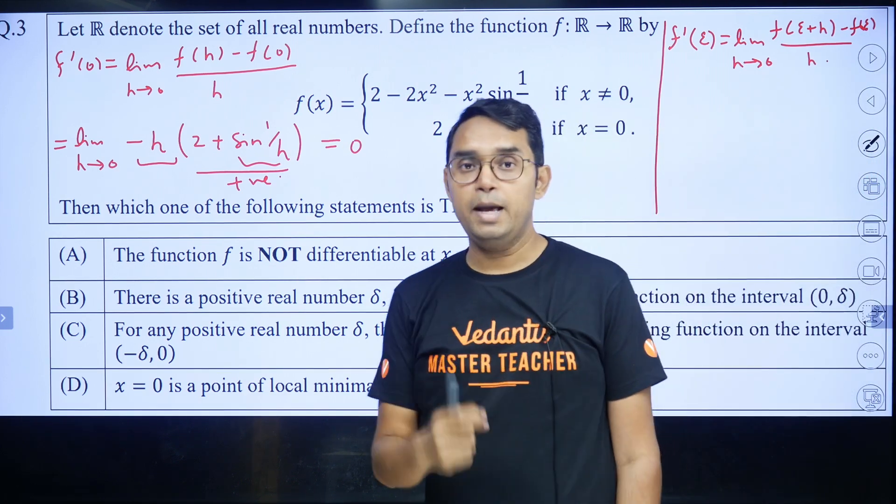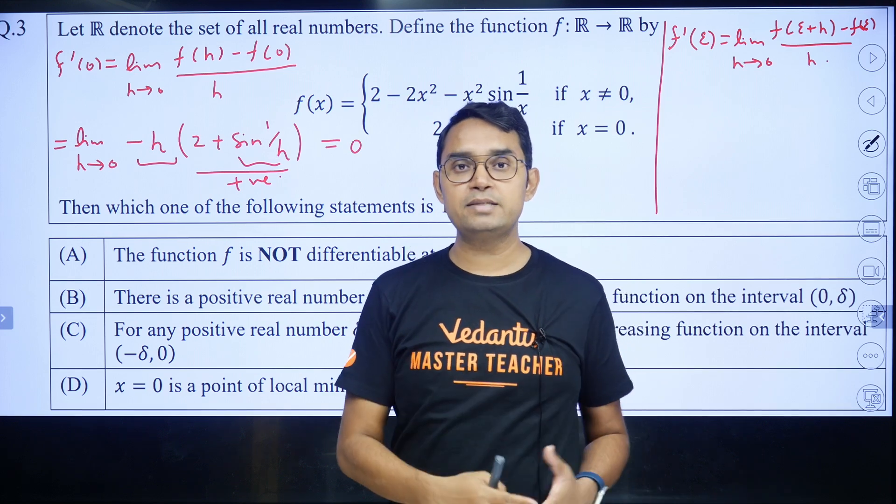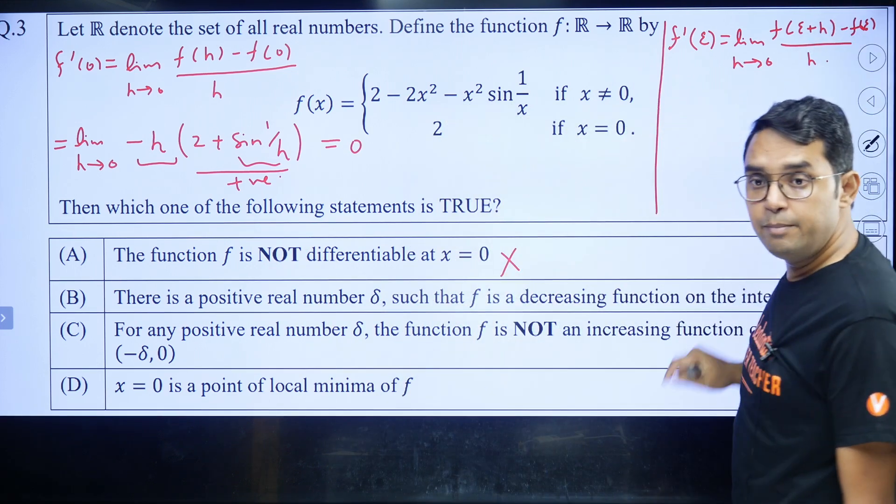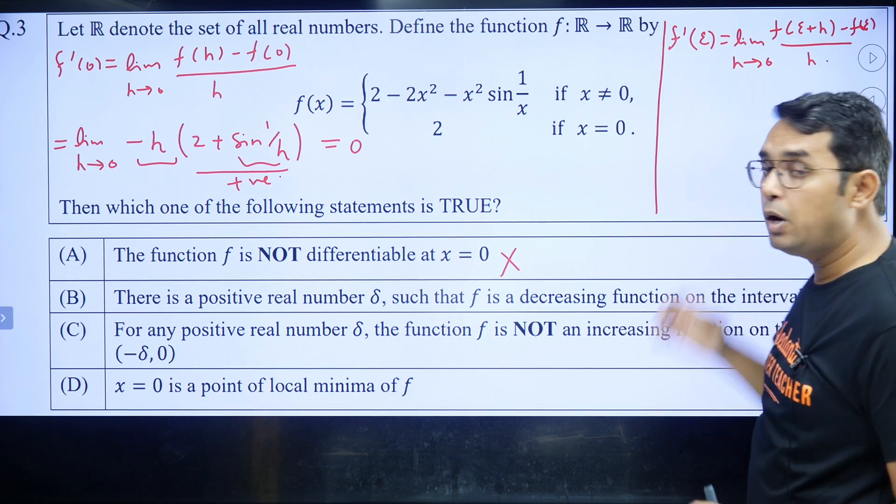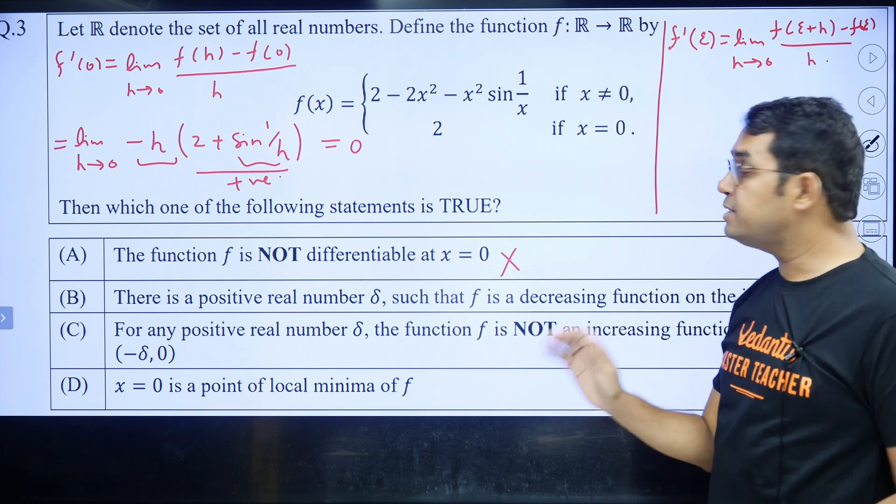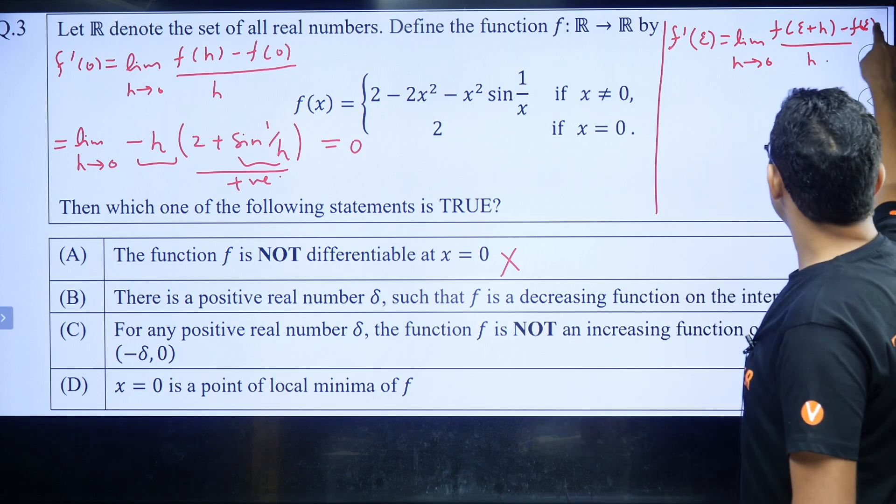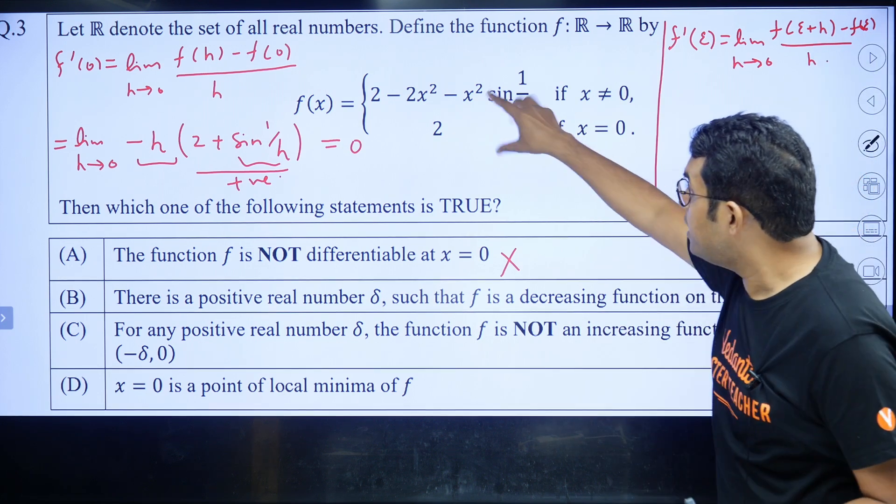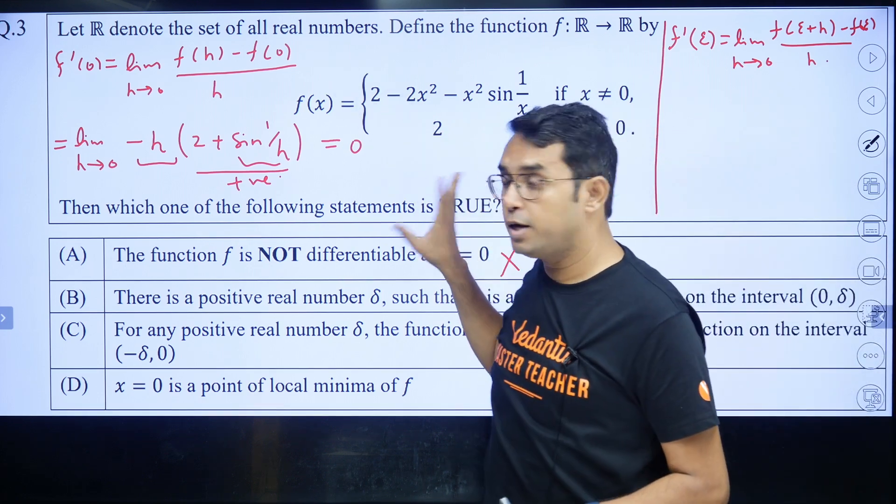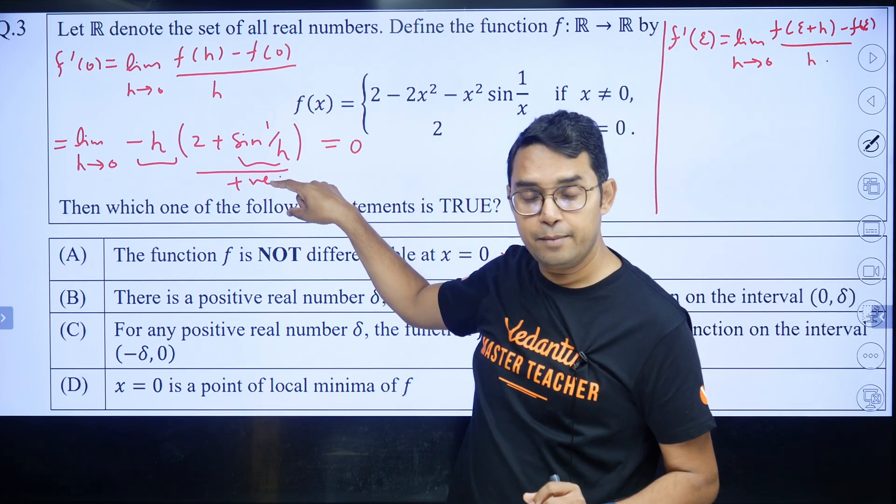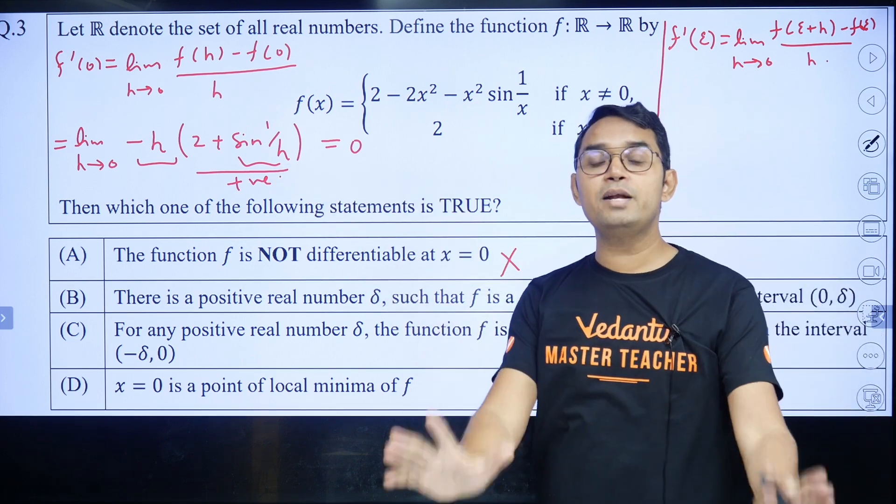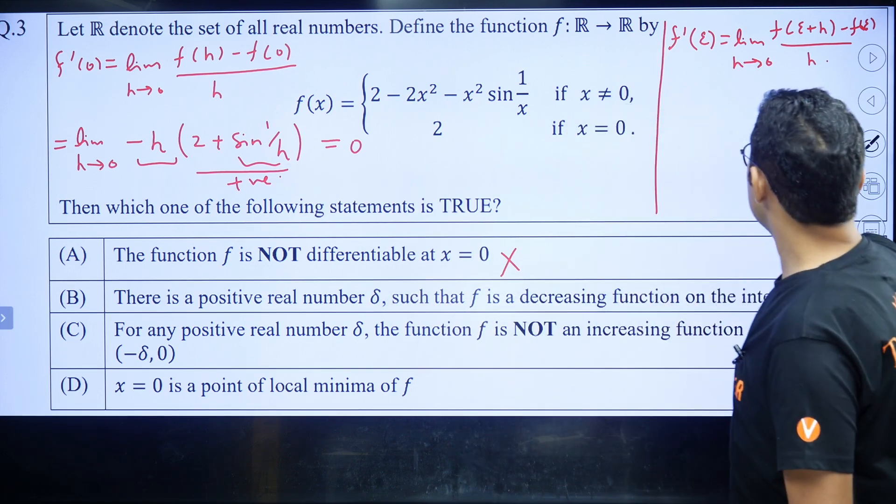Now, whatever small ε you choose - 10^(-100), 10^(-1000) or whatever - if you are computing this limit, you will never encounter f(0) in between. If ε is very small, h is even smaller. So both these things will never use the function value at 0. So there is no use of f(0) here. Whatever we are getting from the first principle calculation at 0, if you are using that for points near 0, this cannot be relied upon. So what is to be done?